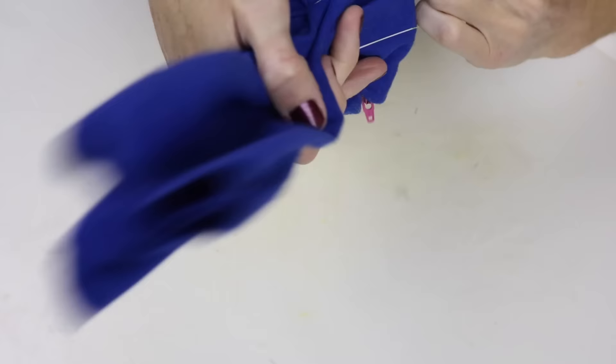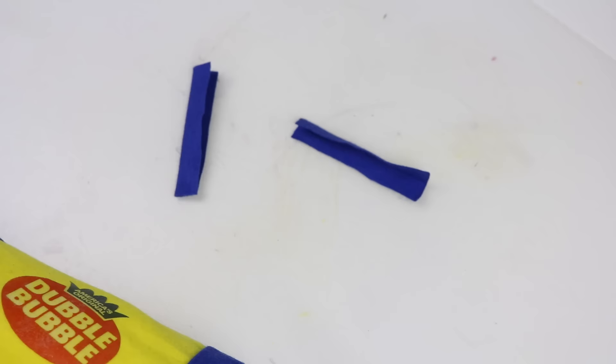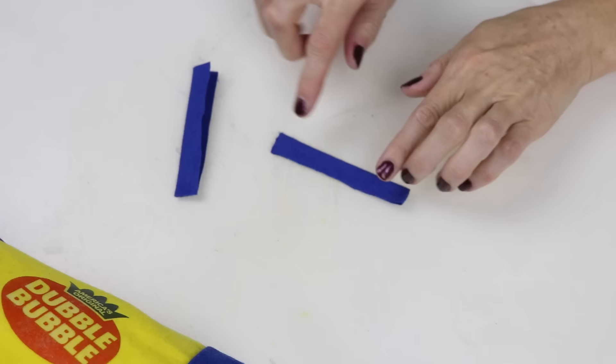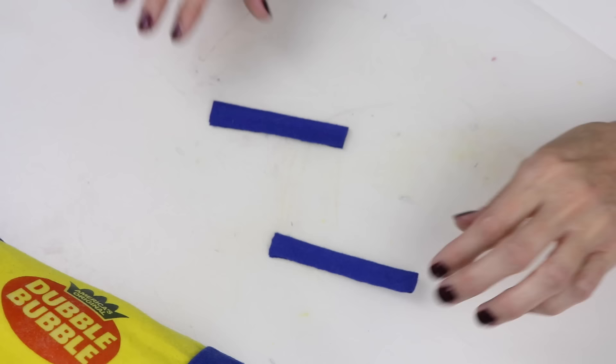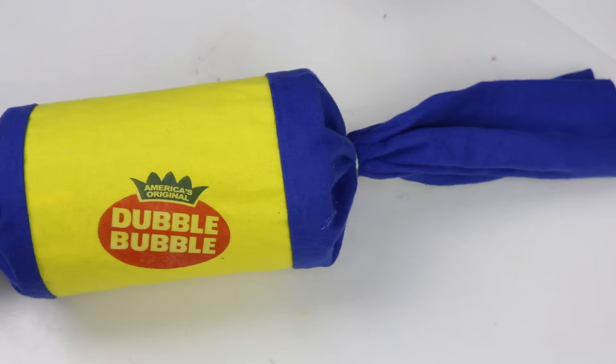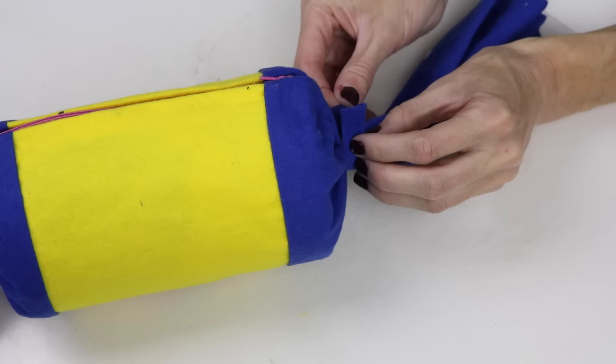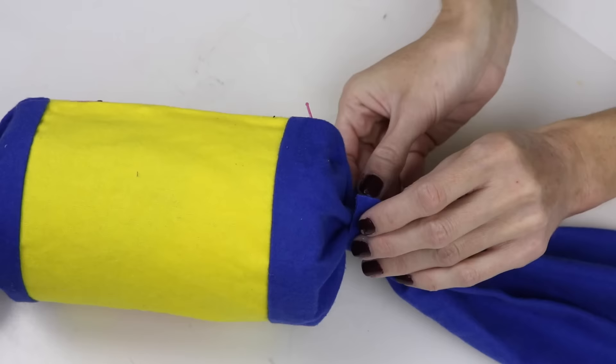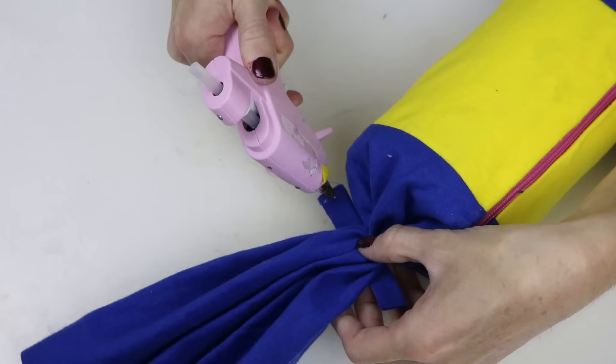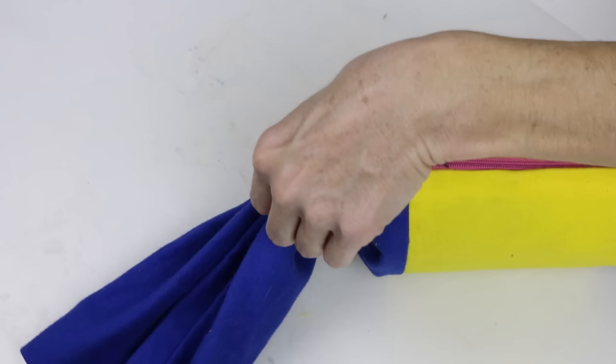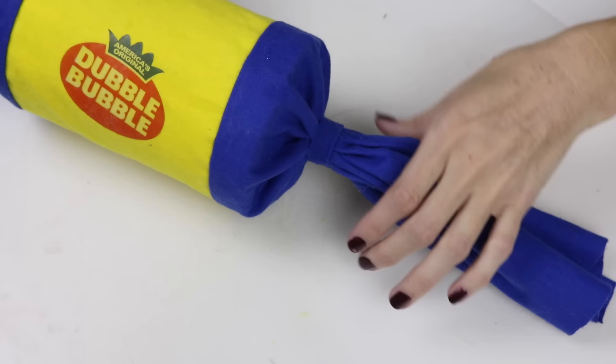I then got two strips of blue fabric, folded those over, glued those together. I placed those around the rubber bands. I then cut off some of the excess blue from the side.